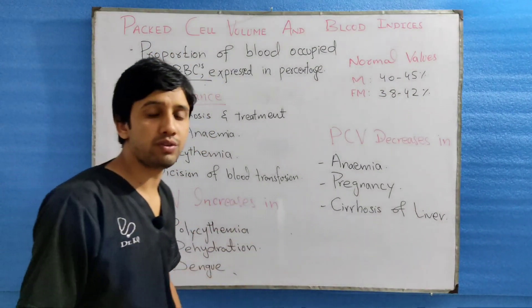Next we are going to discuss the blood indices. Blood indices are calculations derived from the RBC count, hemoglobin content in the blood, and from the PCV.